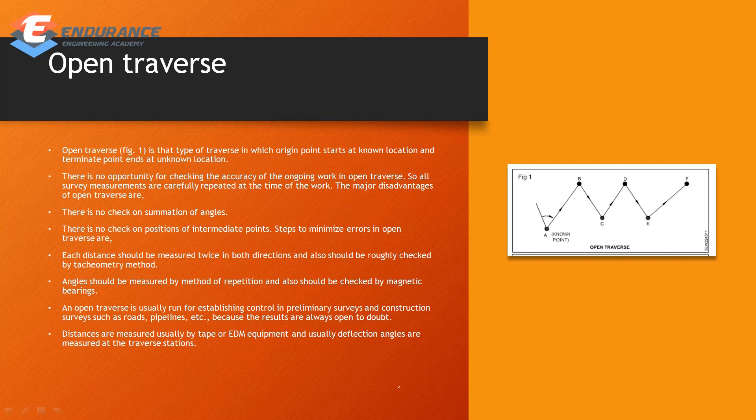Open Traverse: in open traverse, the survey starts at a known location and there is no fixed end point. If we go to an unknown location, we start a survey. Open Traverse is that type of traverse in which the origin point starts at a known location and the terminate point ends at an unknown location.